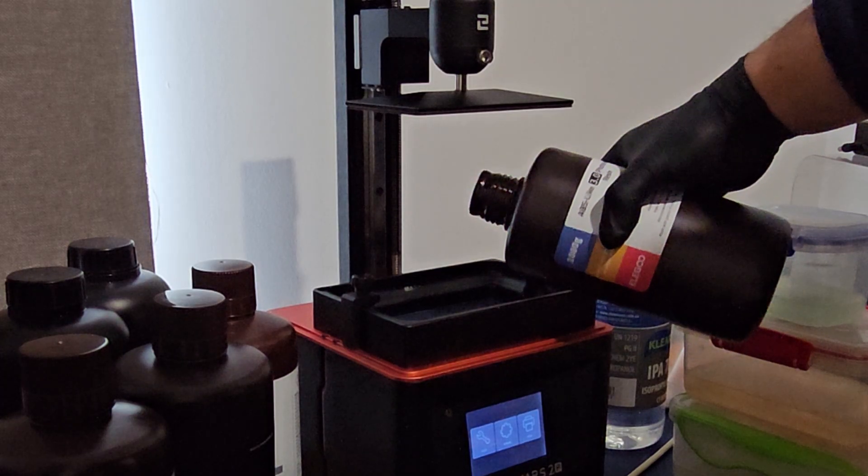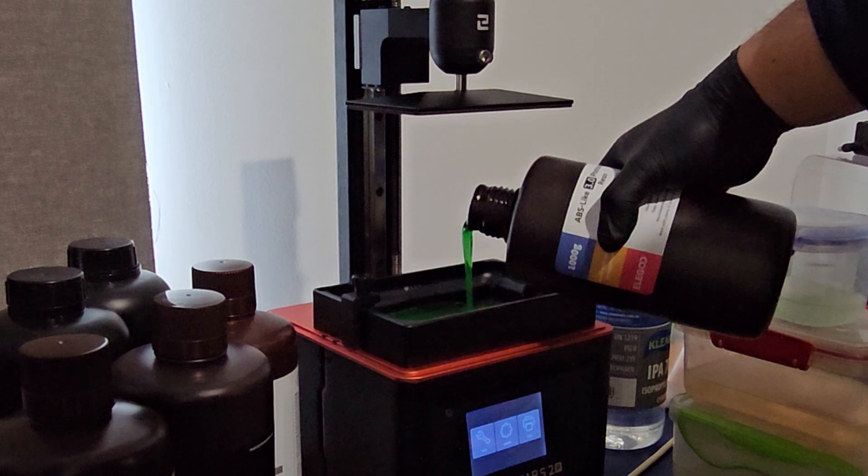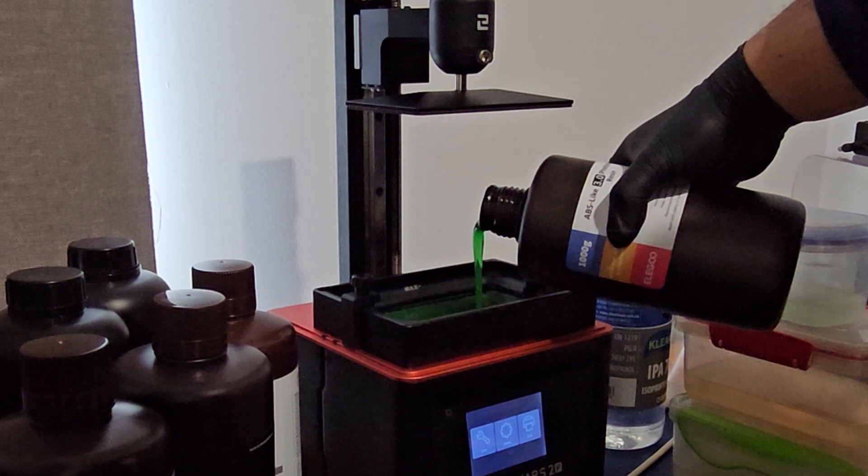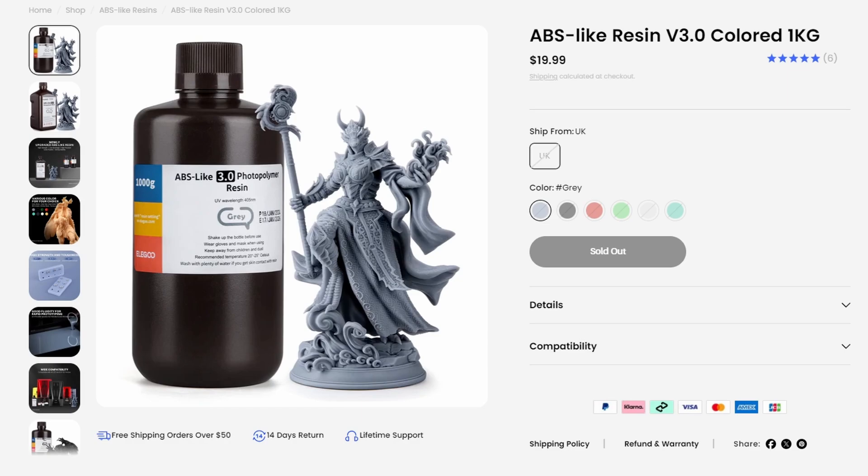The second resin we are trying out today is the Elegoo ABS-like 3.0 resin. Now for this resin, we are specifically trying out the translucent green variant. The resin is priced at an amazing $19.99 USD, which I think is a great price for any kind of resin.